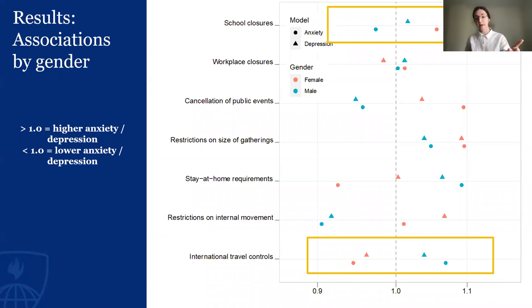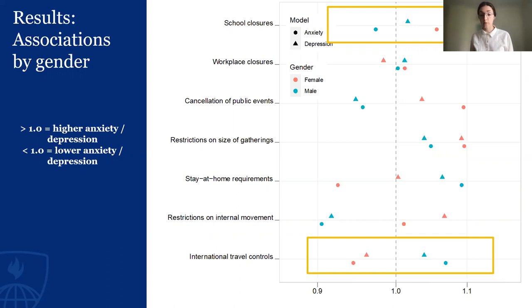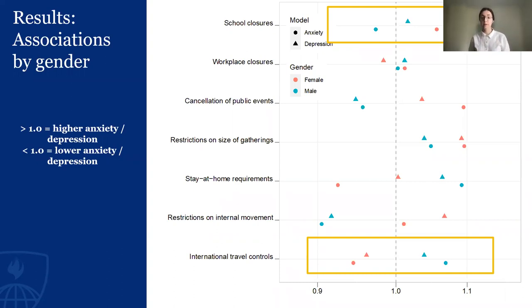The second finding I wanted to draw attention to was that for international travel controls, these associations were stronger for men compared to women. What we hypothesize in our paper is that this might be related to the fact that men are typically expected to travel more when they're employed. And so it might have been more distressing for international travel to be limited for men compared to women.